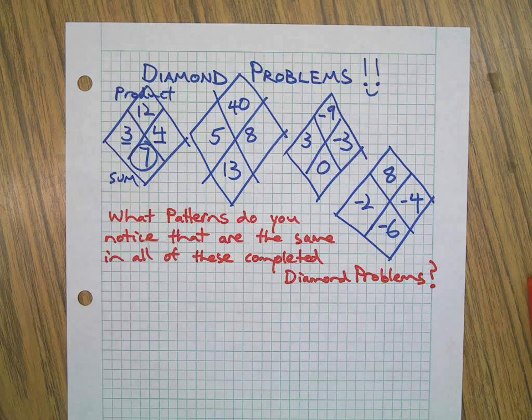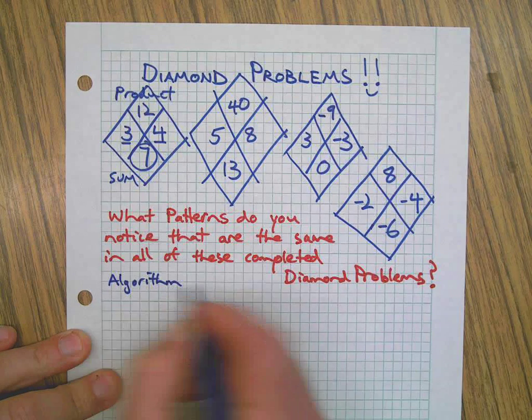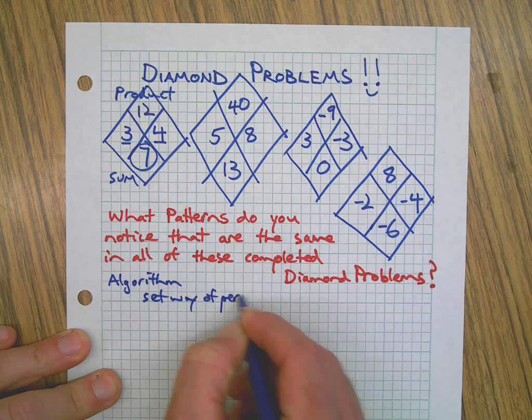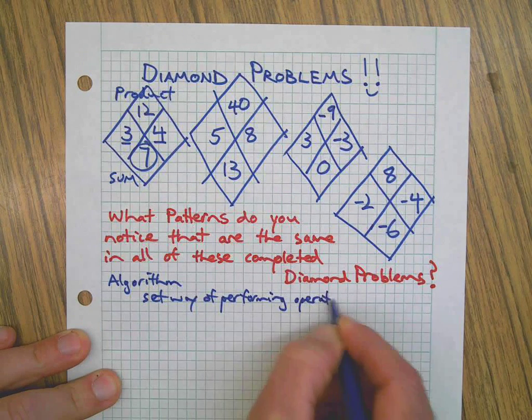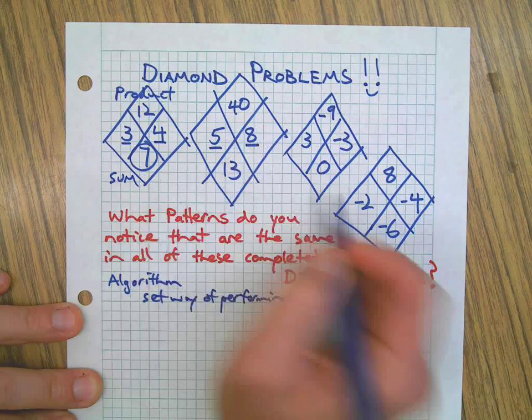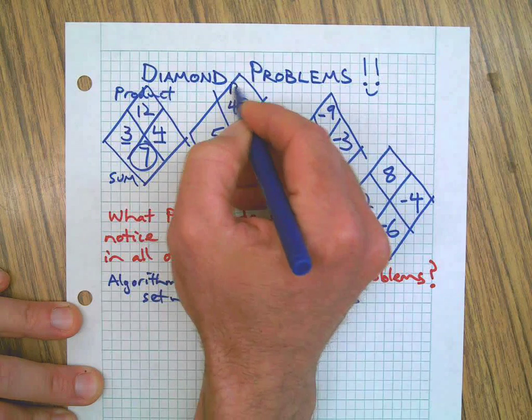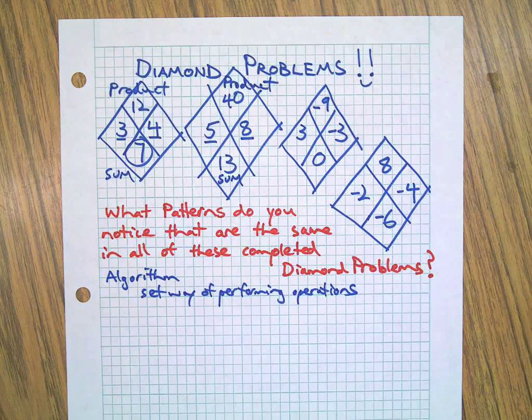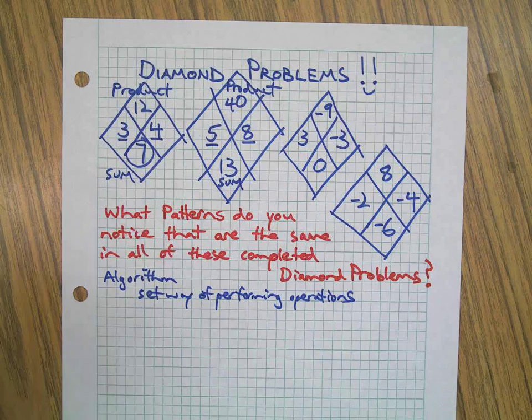Let's see if this pattern holds for all of these other ones, and if it does then we've got ourselves a rule or an algorithm, right? A set way of doing things, a set way of performing operations. A system if you will that you can trust and use every time. Is 13 the sum of 5 and 8? Yes it is, we're adding them, and when we multiply you get the idea.